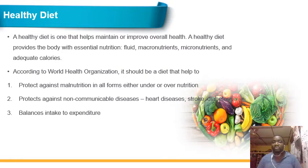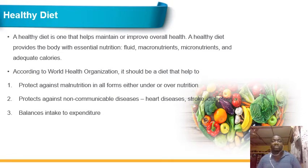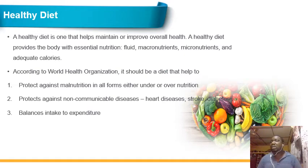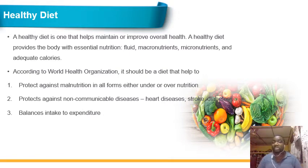It helps maintain or improve overall health. In section 1, we defined health as a complete state of social, physical, and mental well-being. For us to have that complete state of social, mental, and physical well-being, we must take a healthy diet. For children to grow, or for us to meet up with the requirements for our age and sex in terms of height and weight, we must be on a healthy diet.